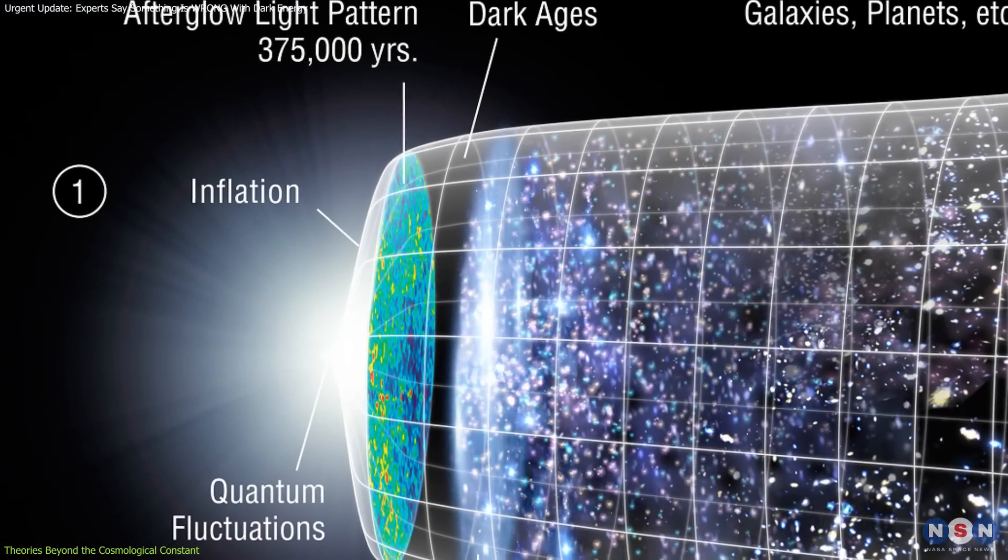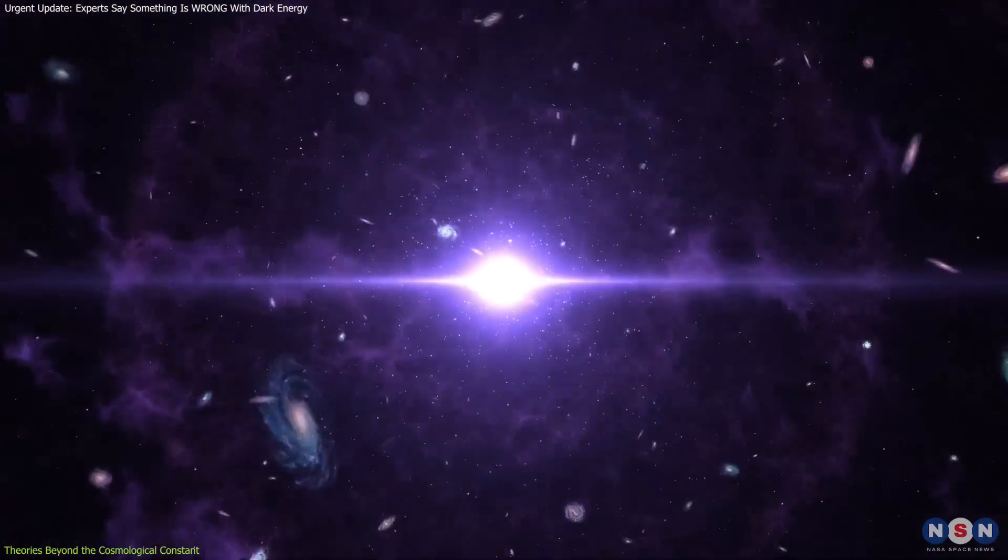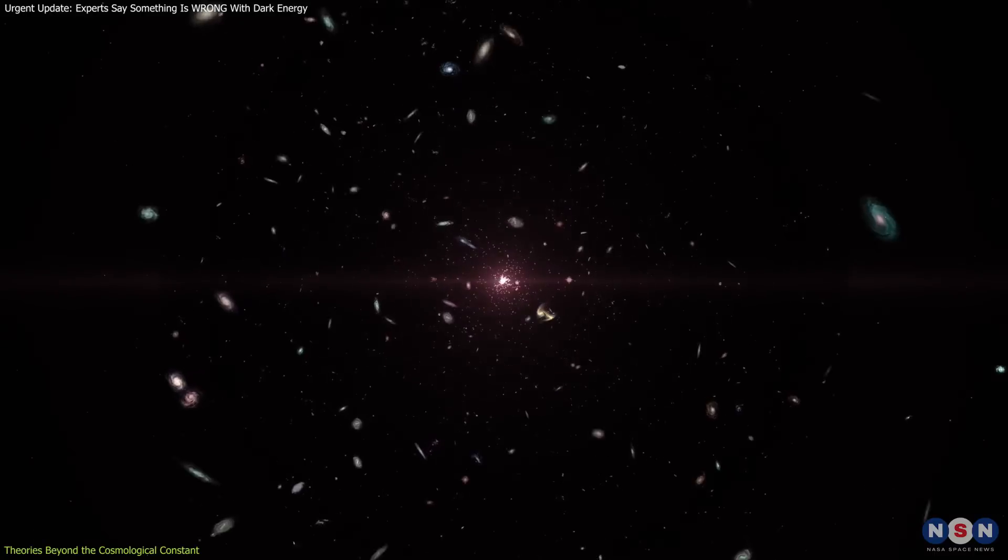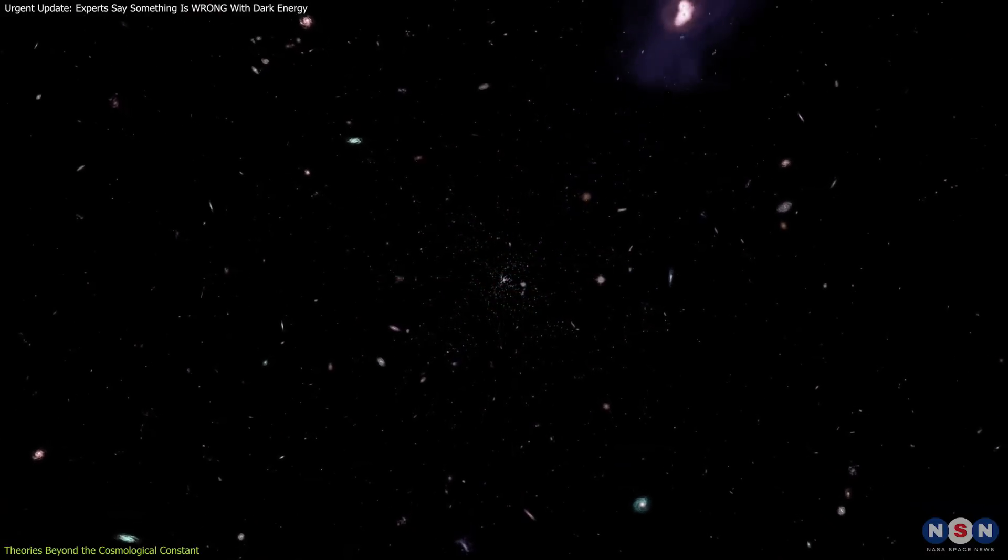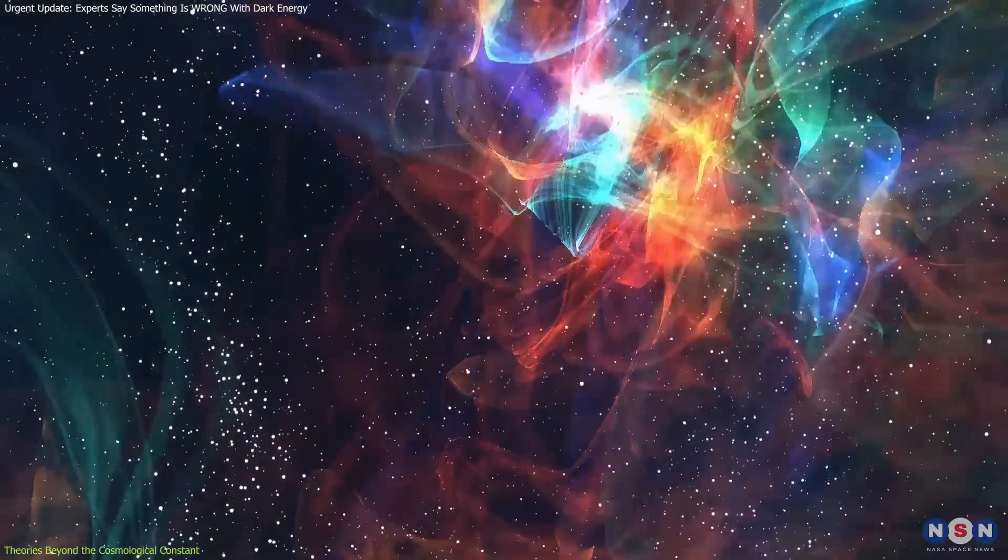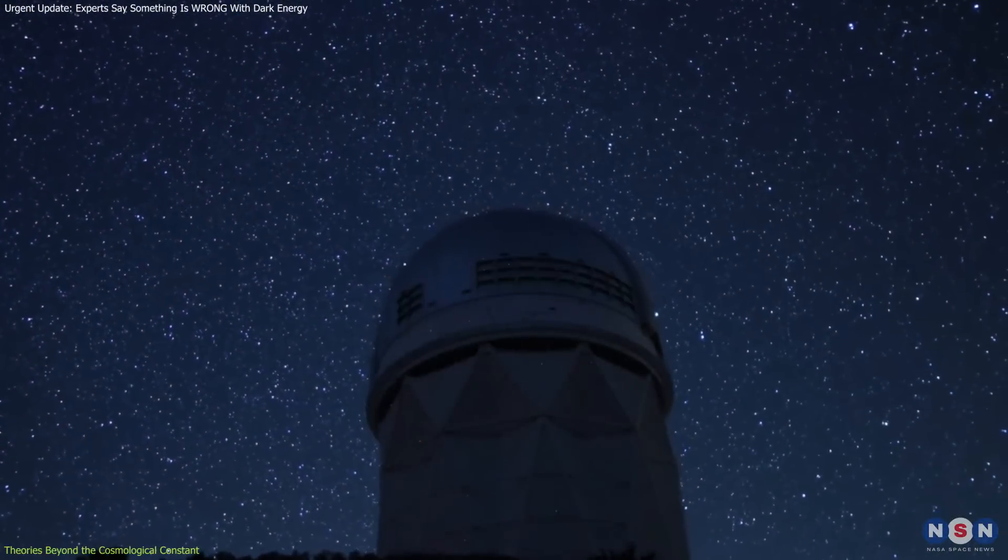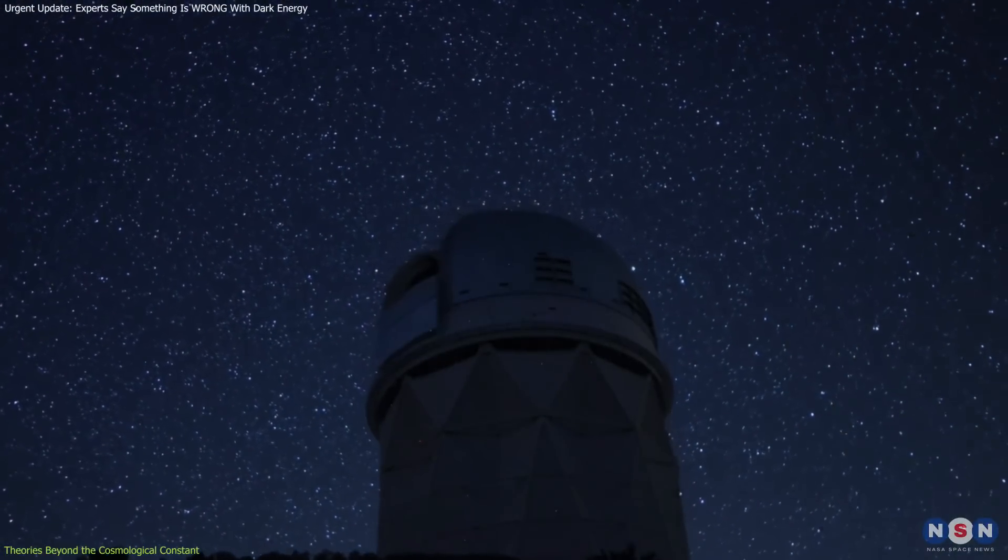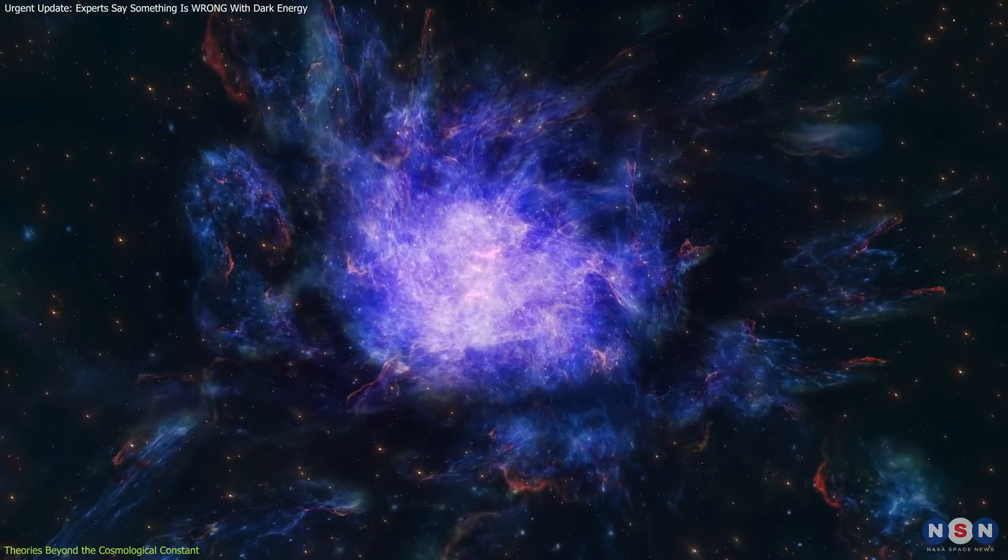Quintessence works much like the inflationary period that occurred shortly after the Big Bang. Inflation caused the universe to expand rapidly in a very short time, but it wasn't a constant force. It decayed as the universe grew larger. Quintessence could act similarly, changing its strength as the universe evolves. This theory would align with the new findings from DESI and DES, which imply that dark energy might have been stronger in the past and is now weakening.